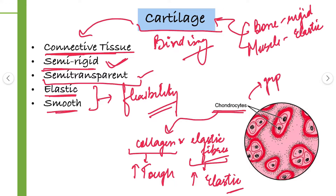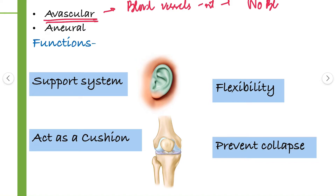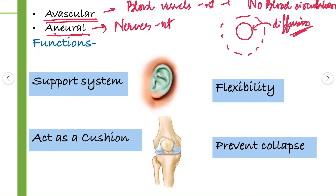Chondrocytes are always present in groups, and that group is called the lacunae — there are different lacunae. Cartilage is avascular, meaning blood vessels are absent inside them — there is no blood circulation and no blood supply. They are also aneural, meaning nerves are also absent inside them. So how do they get their nutrients? By the process of diffusion, they take up nutrients from the surrounding structures.